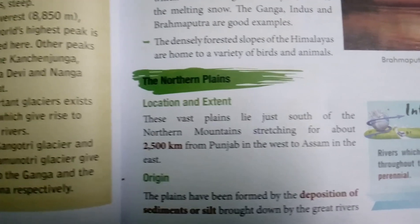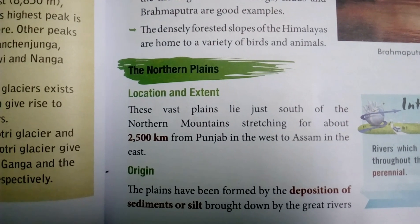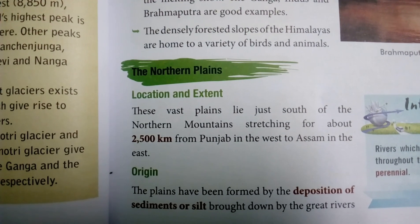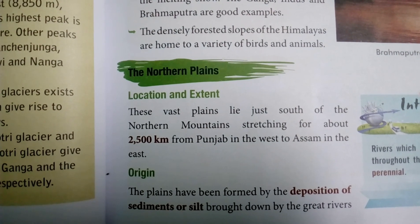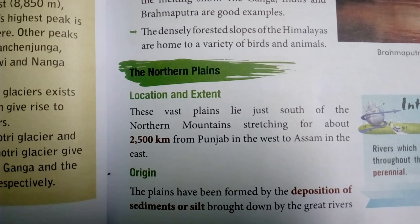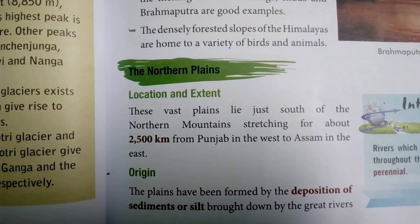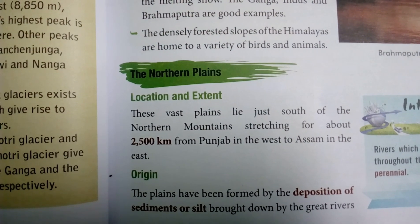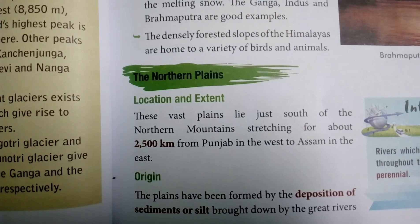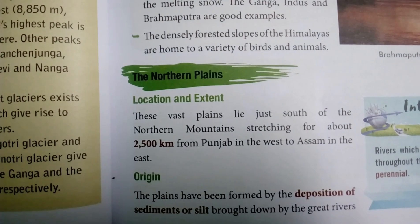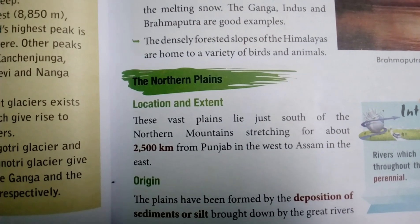Location and Extent. These vast plains lie just south of the northern mountains, stretching for about 2,500 km from Punjab in the west to Assam in the east.